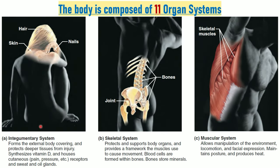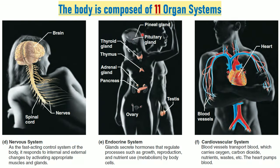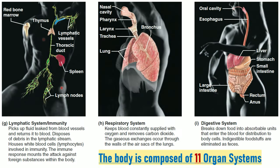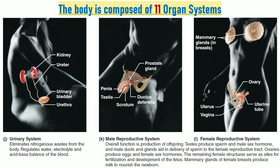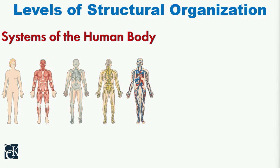The body is composed of 11 organ systems. We have the integumentary system — the skin and its appendages — the skeletal system, the muscular system, the nervous system, the endocrine system responsible for secretion of hormones that regulate the internal environment, the cardiovascular system — the heart and blood vessels that circulate blood throughout the body — the lymphatic system responsible for immunity, the respiratory system, the digestive system, the urinary system, and the male and female reproductive systems.